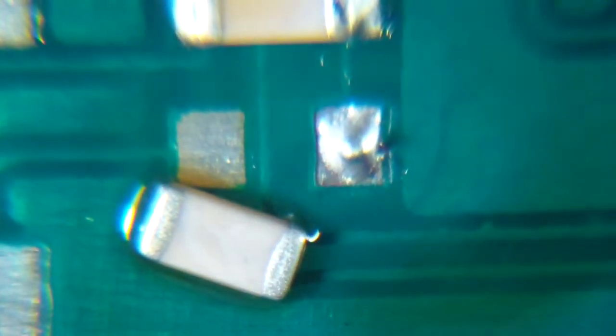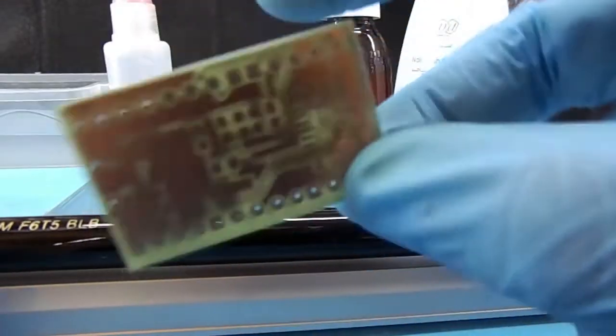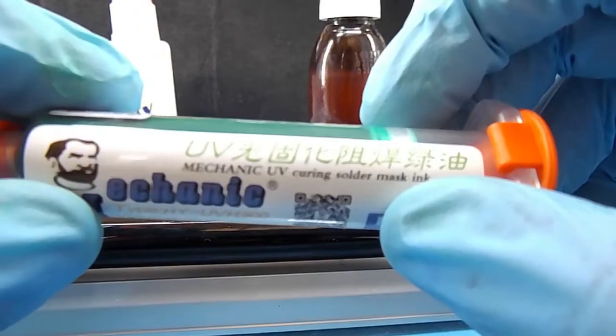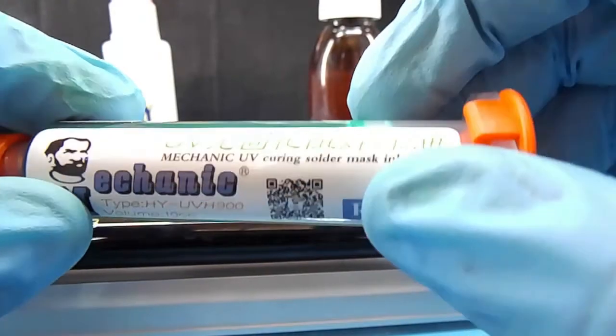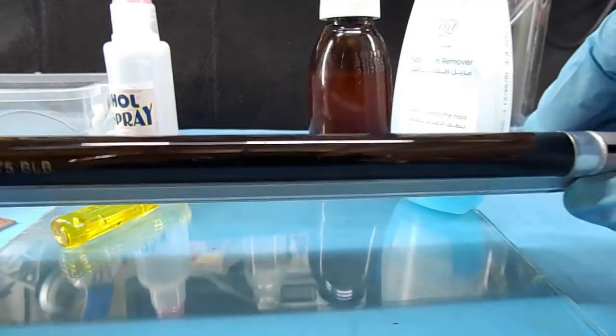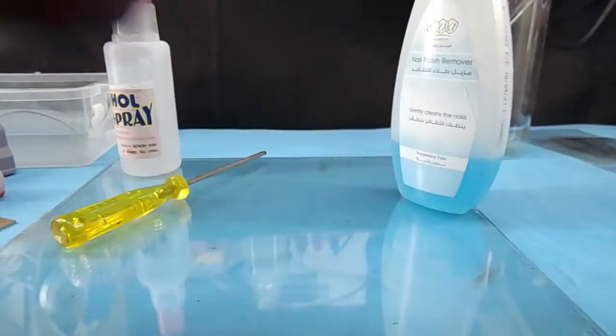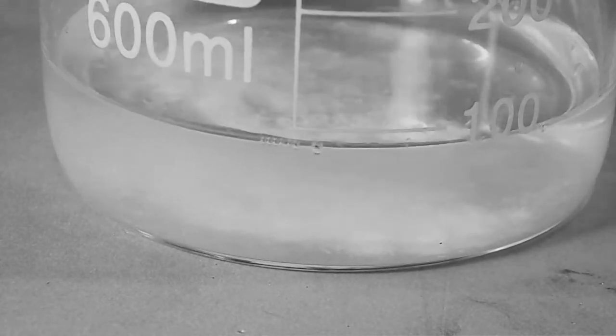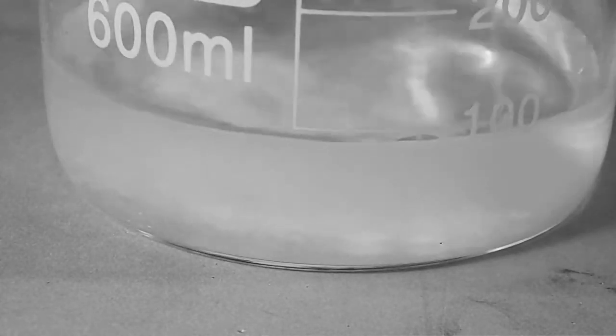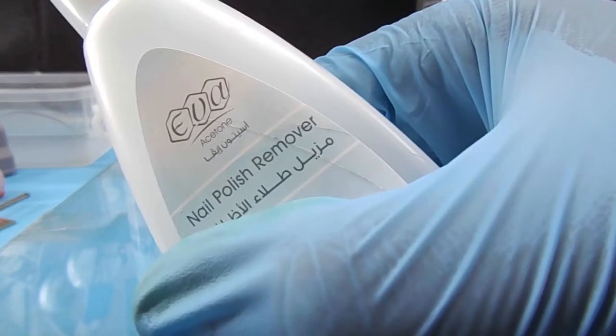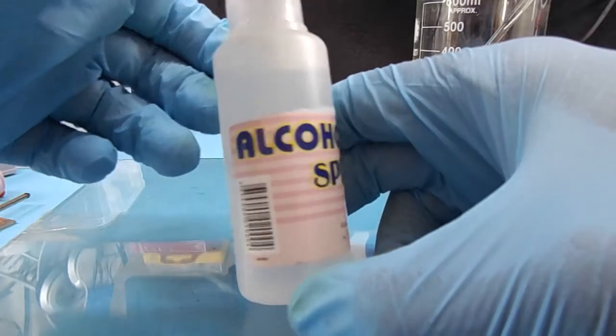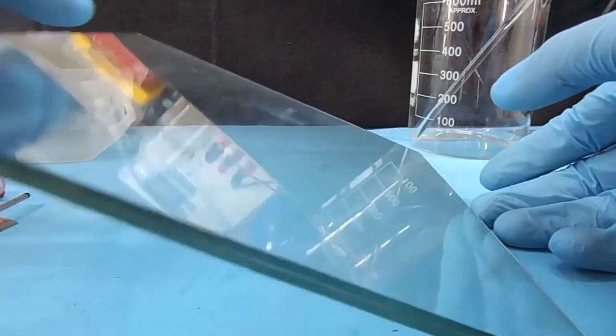In this video we're gonna need a PCB, UV curable solder mask, UV light source, tinning solution. If you want to know how to make it, check out my last video. Nail polish remover, alcohol, two pieces of glass.